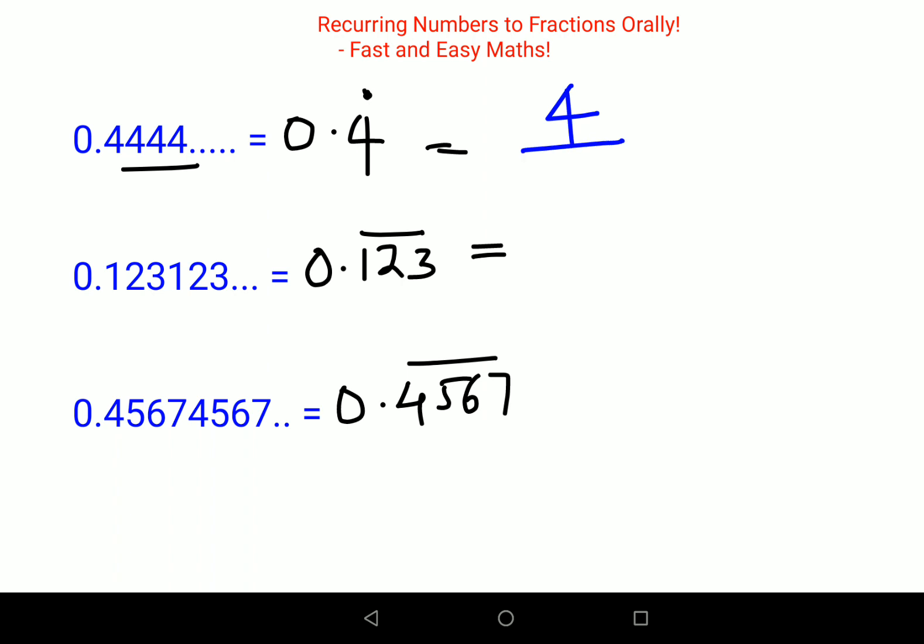Since the only number that is getting repeated is just 4, that is a single number, so you will write this as only single number 9. Here how many numbers are getting repeated? 3 numbers, right? So again, 123 will be written as it is and you will divide by 999.